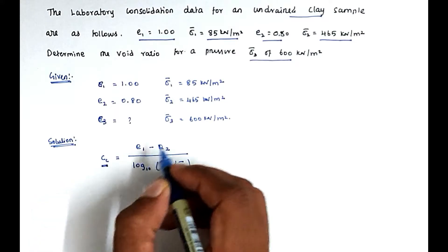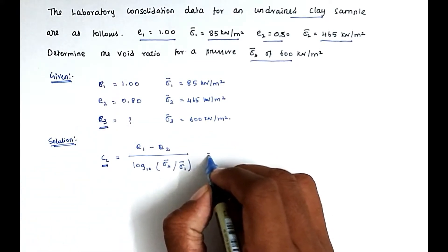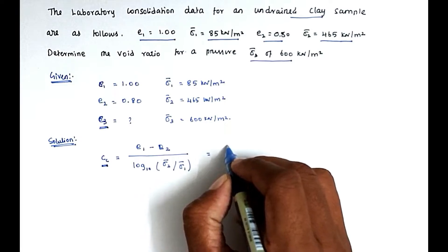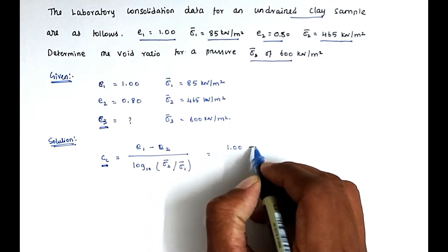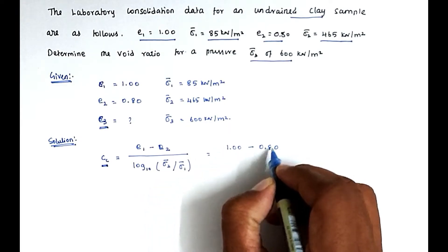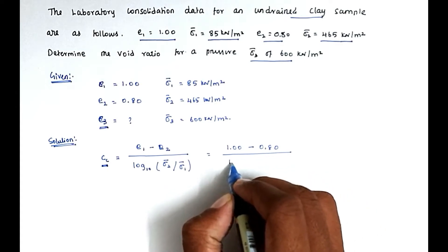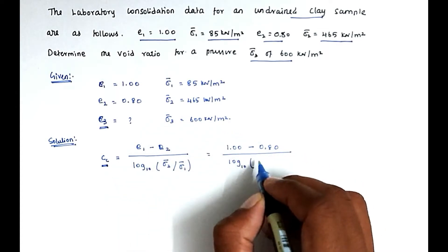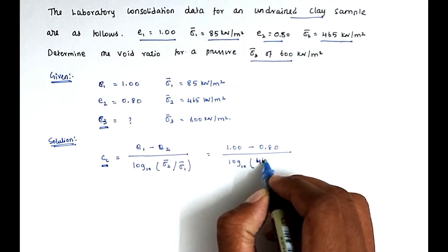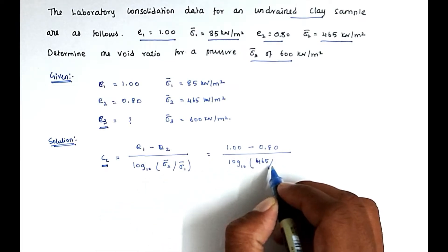So from the cc value we can find out the e3 value. Now we can substitute all the values. So e1 equal to 1.00 minus e2 is 0.80, divided by log 10, sigma 2 value is 465 divided by sigma 1 value is 85.